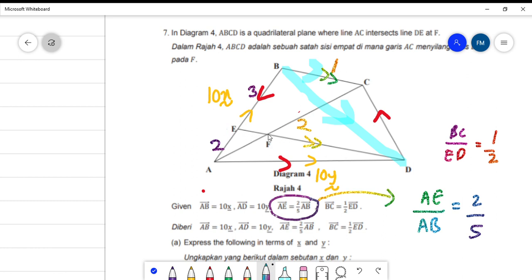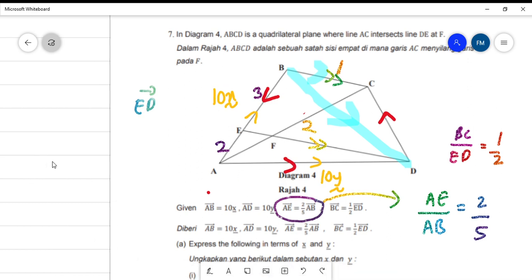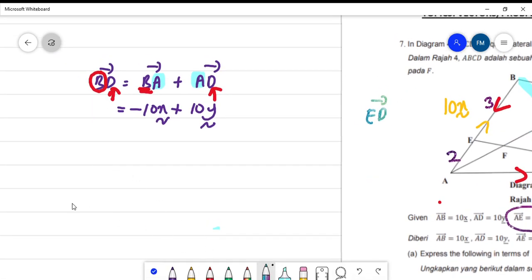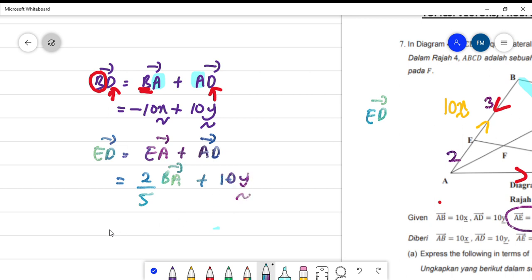You need to realize when it gives you information earlier, it says that BC is parallel to ED with this proportion, so we can find ED first. So ED is E to D. ED is EA plus AD. So ED is negative AE plus AD, which is negative 4x plus 10y.